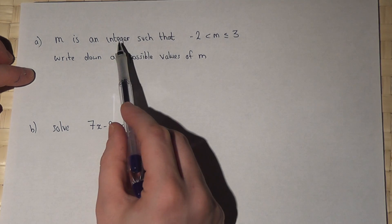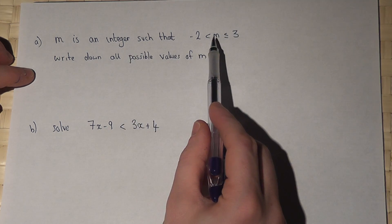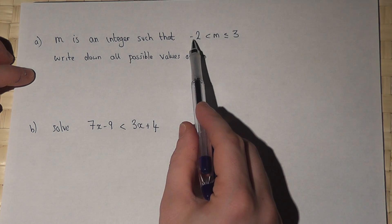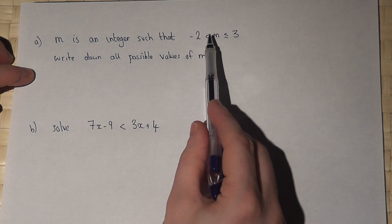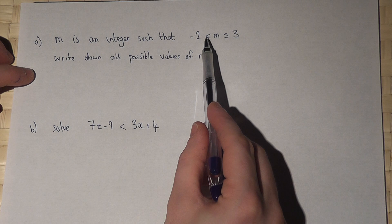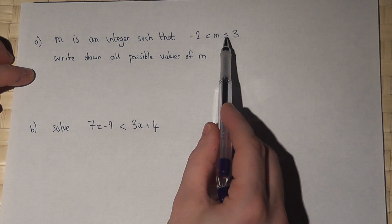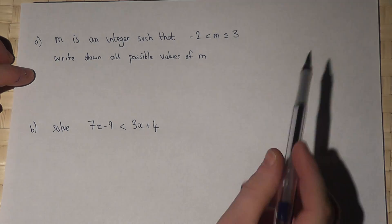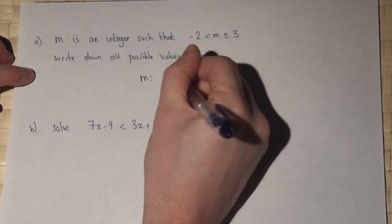An integer is a whole number and m can take any value between -2 and 3, but this symbol here means m is bigger than -2 but does not include -2. Whereas m is less than or equal to 3, so m cannot include -2.